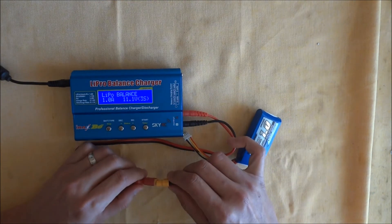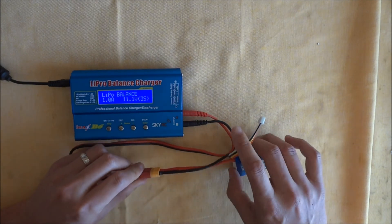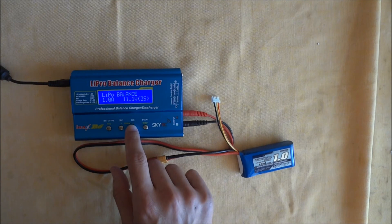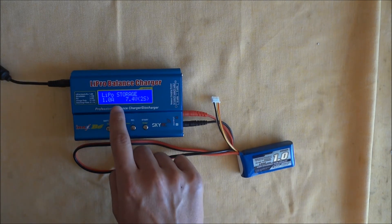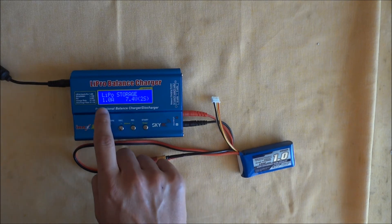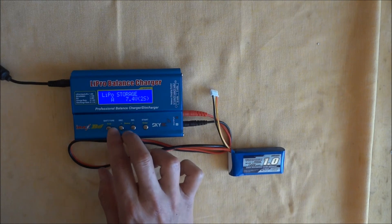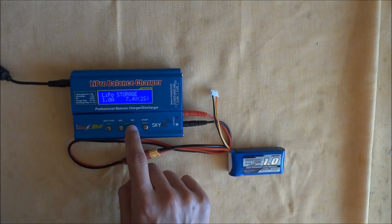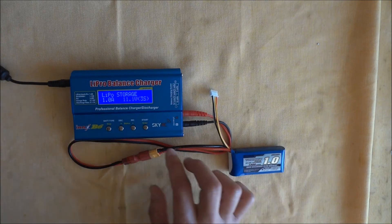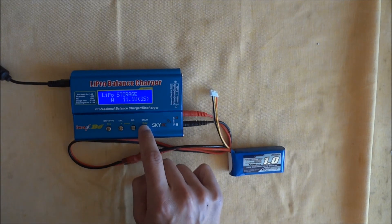So all you do is do the same thing. You don't need to plug in the balance lead, just the charge discharge lead. Just scroll through to the right or left, look for the storage function. You do exactly the same thing, you input everything else, so it's a thousand milliampere hour or one amp, so that's correct. Enter that, and it's not a 2S, we want to change it to a 3S LiPo, 11.1 volts, enter that, and then to start it again, hold down the button.